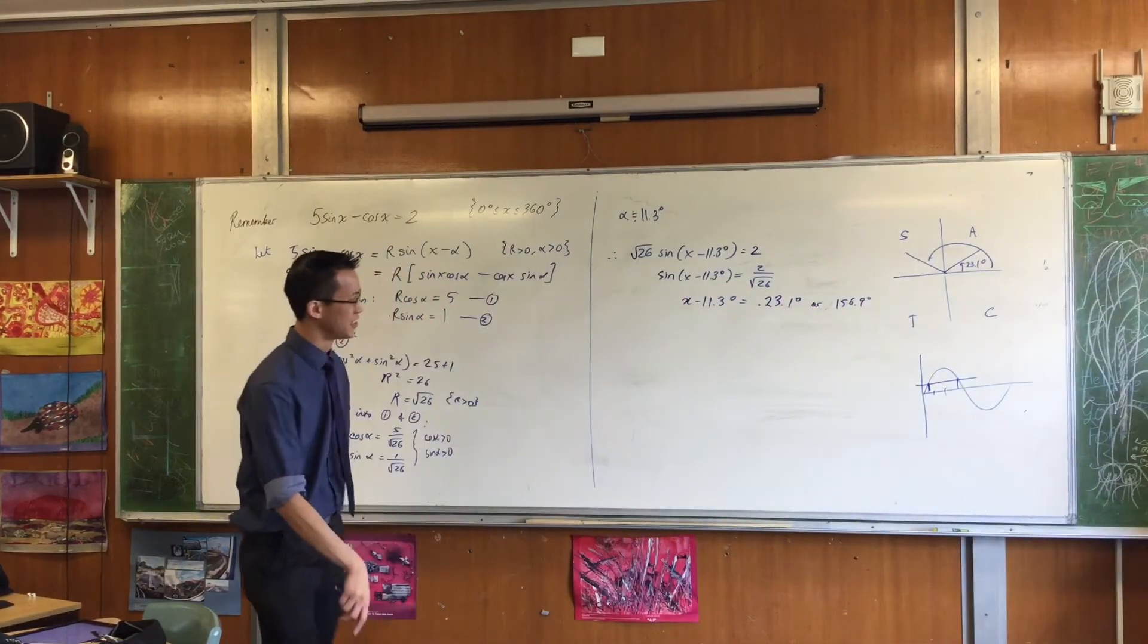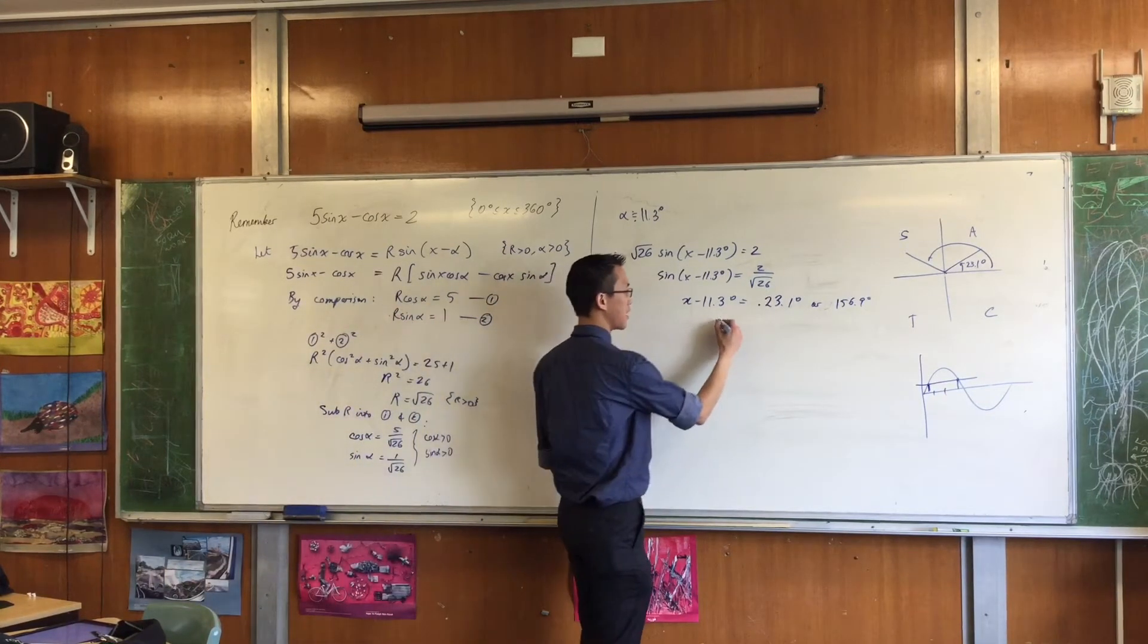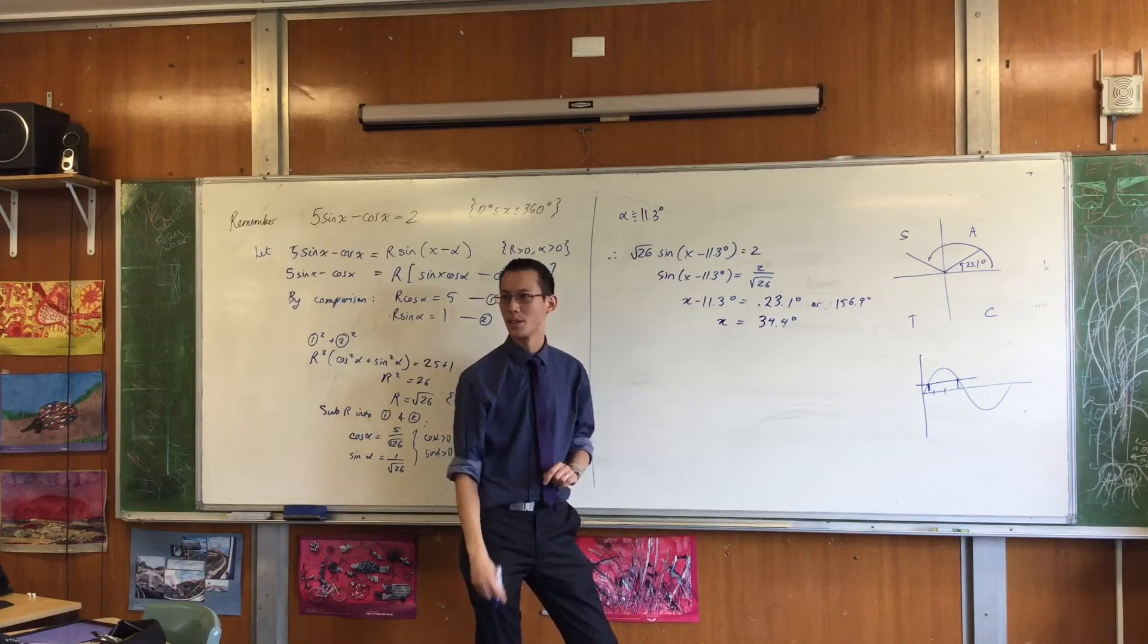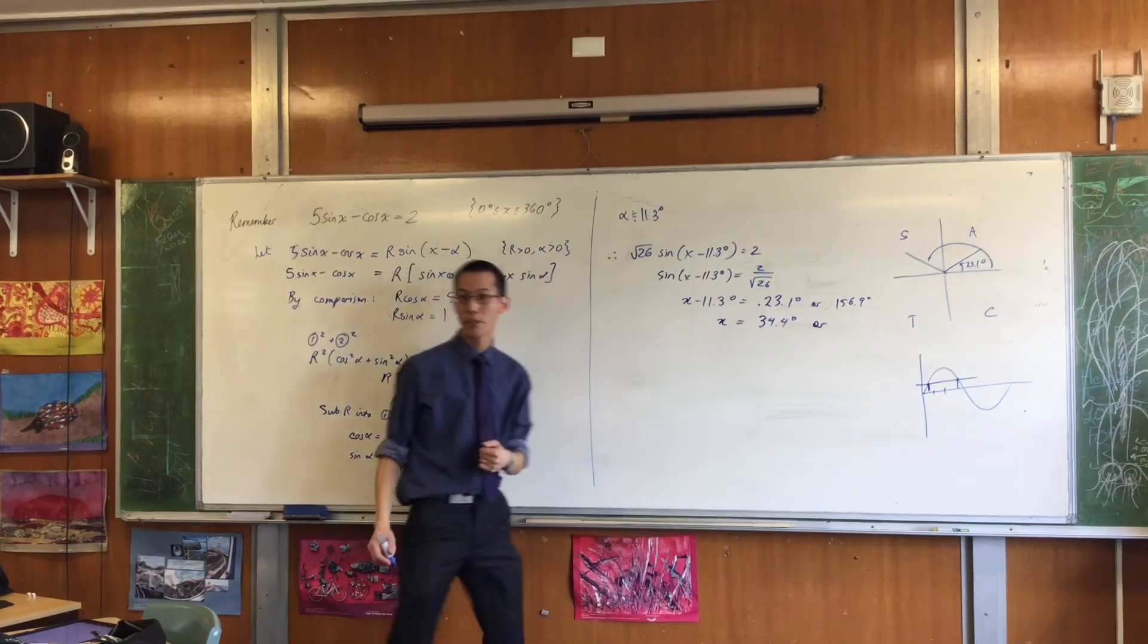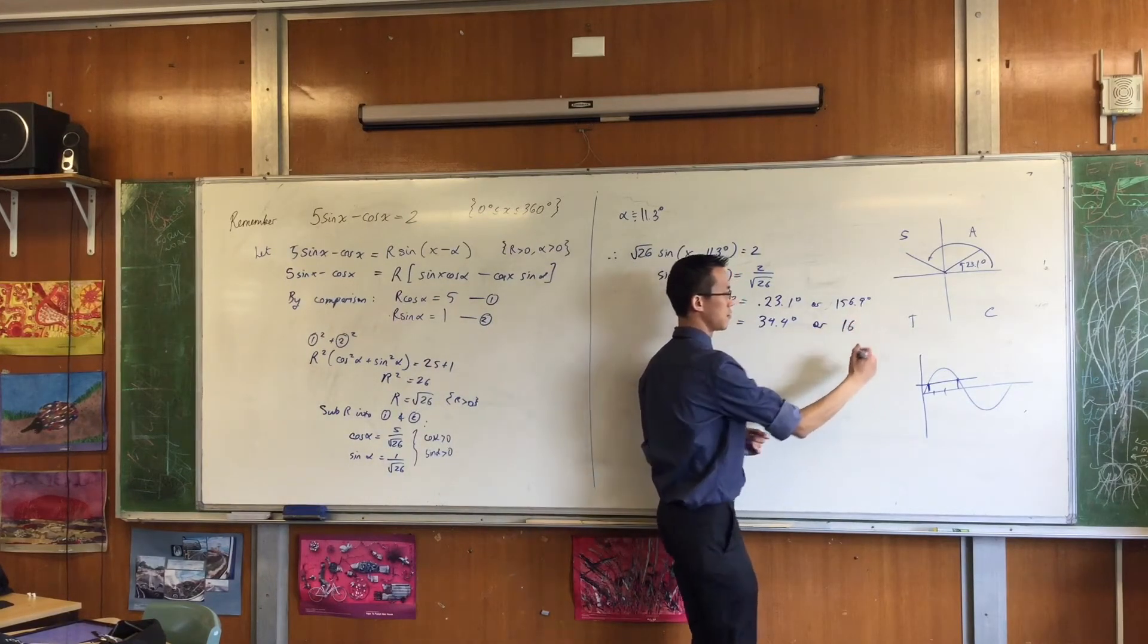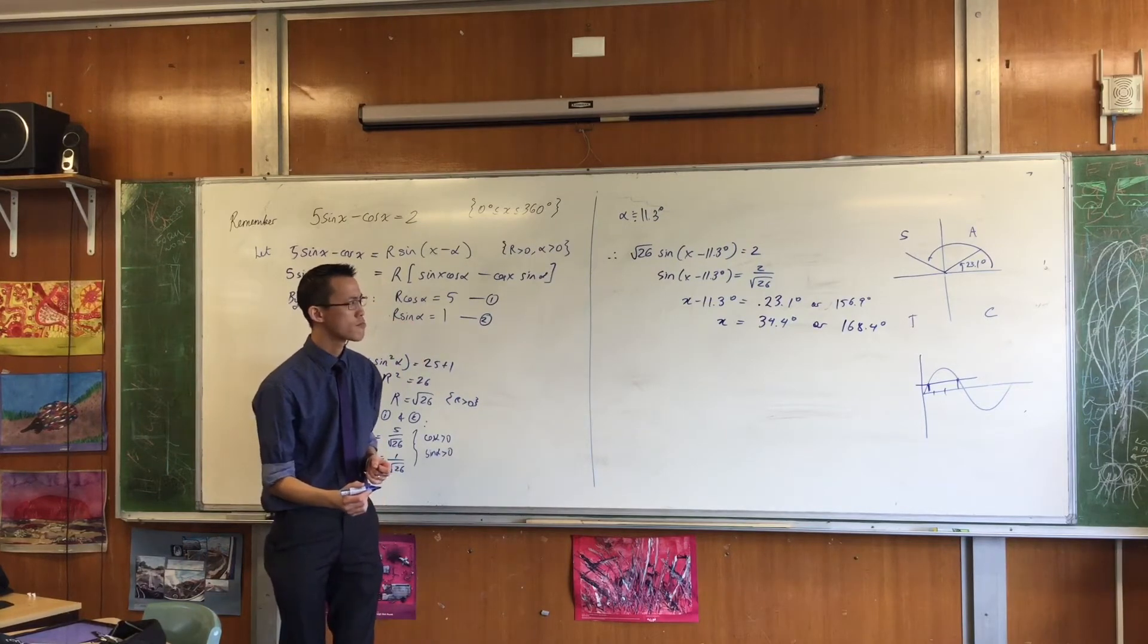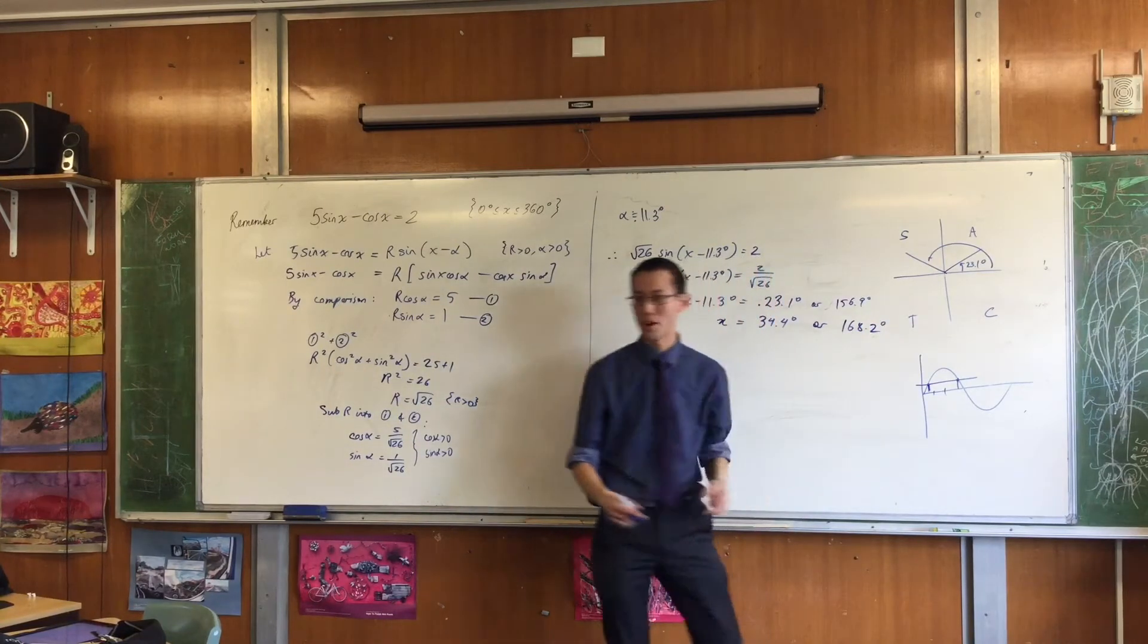I don't have x here. I have x take away 11.3. So what should I do to both sides? I'll just add 11.3. If I add 11.3 to the other side, I should get a number that I recognize: 34.4. That's what we got by T results. Wasn't it? Do you remember? Or what's the other one? You add 11.3 and you get 168.2. We're subtracting instead of adding. Okay?